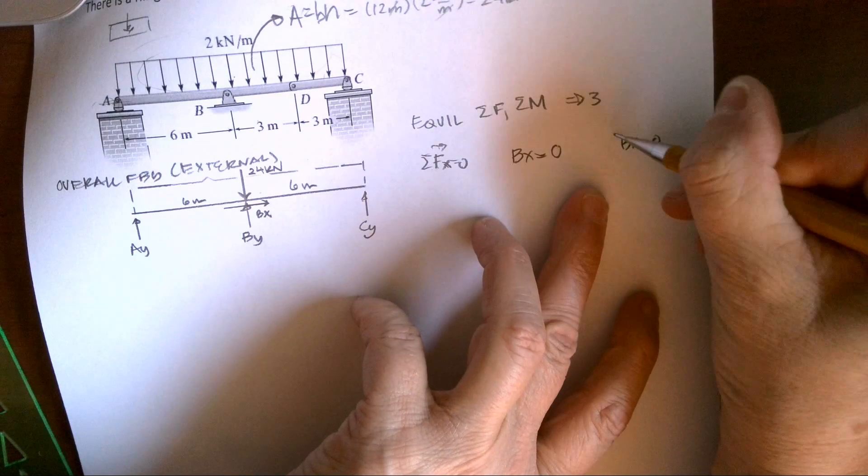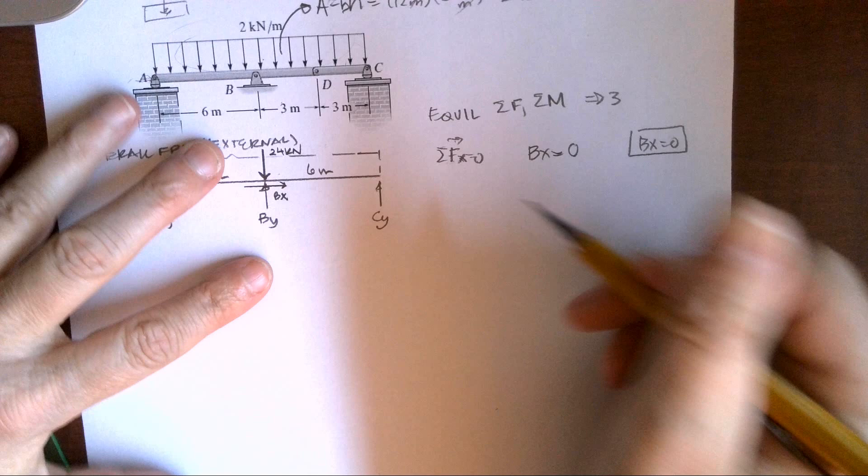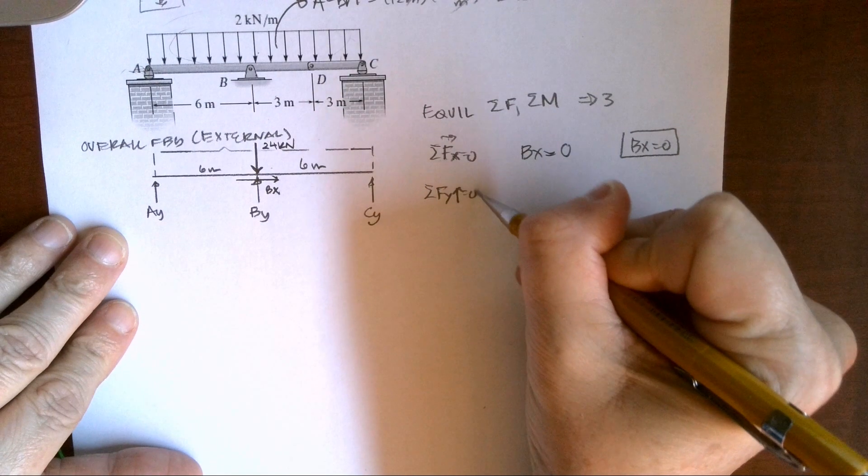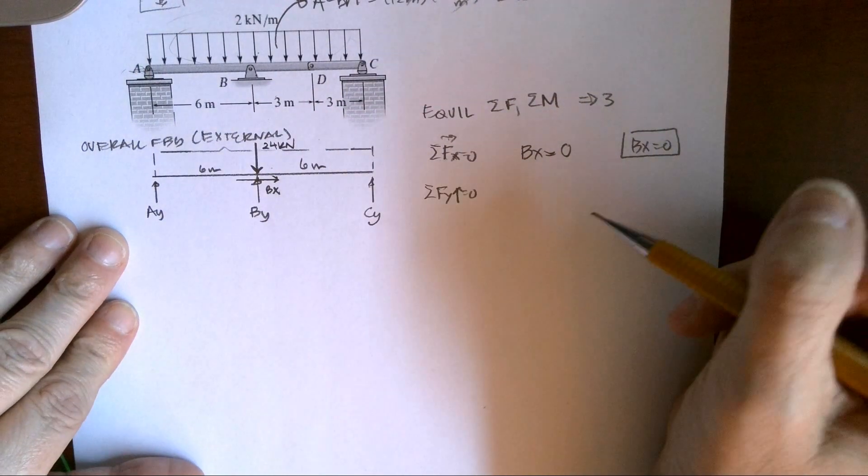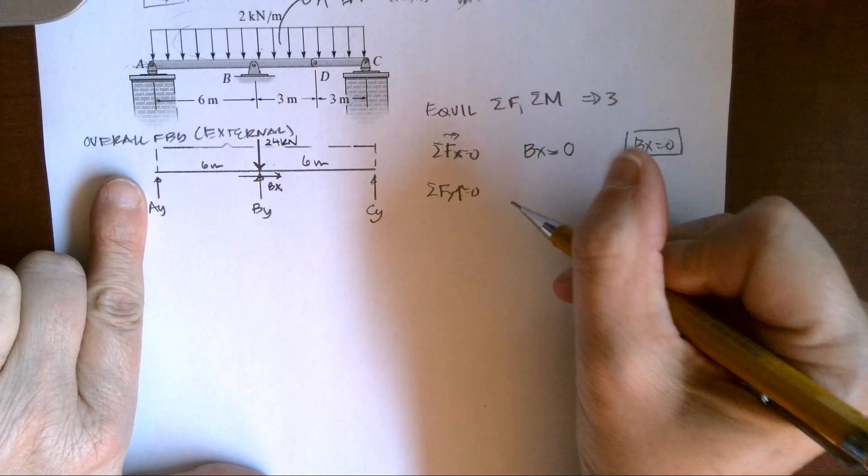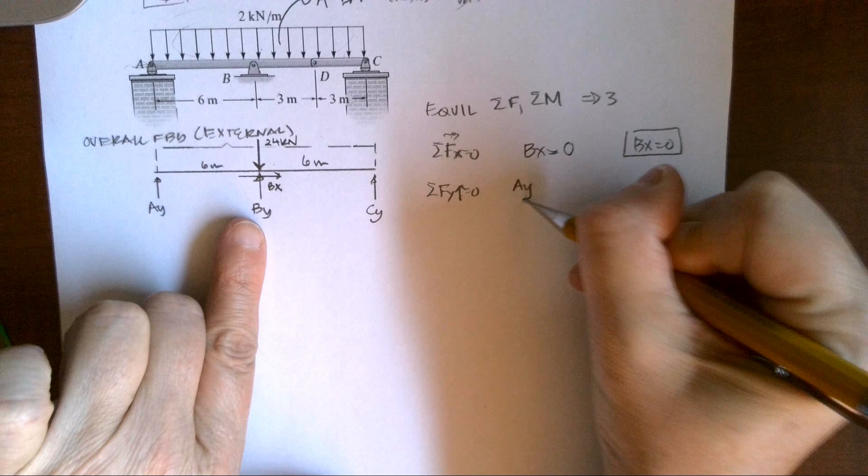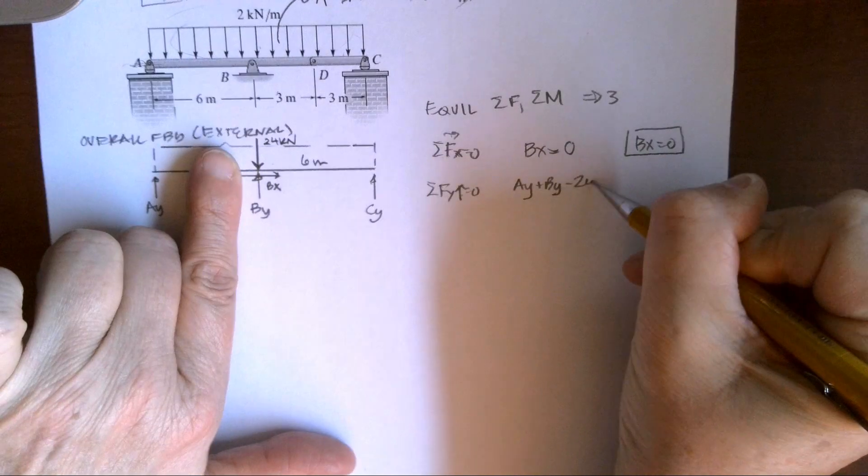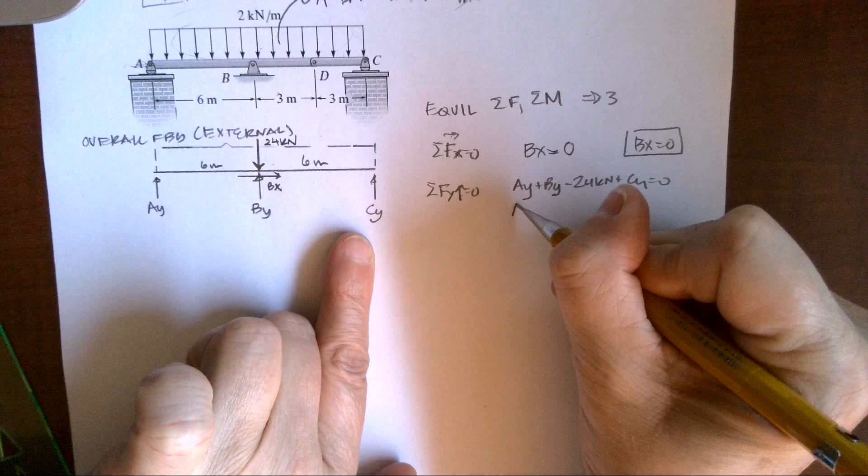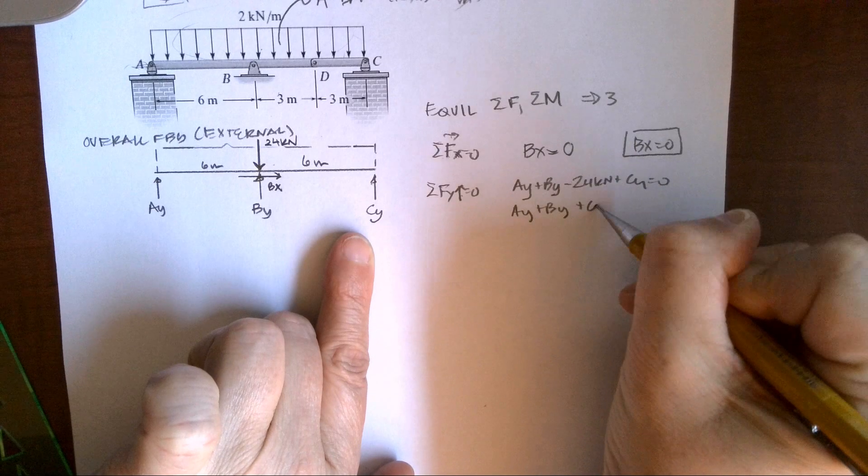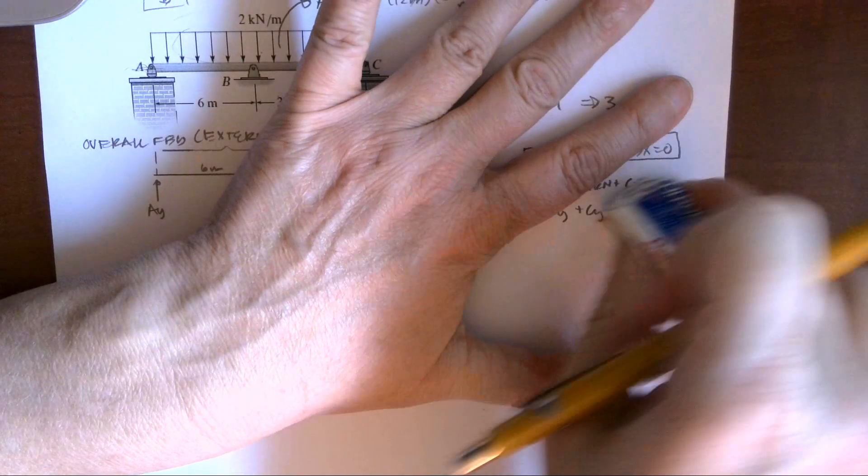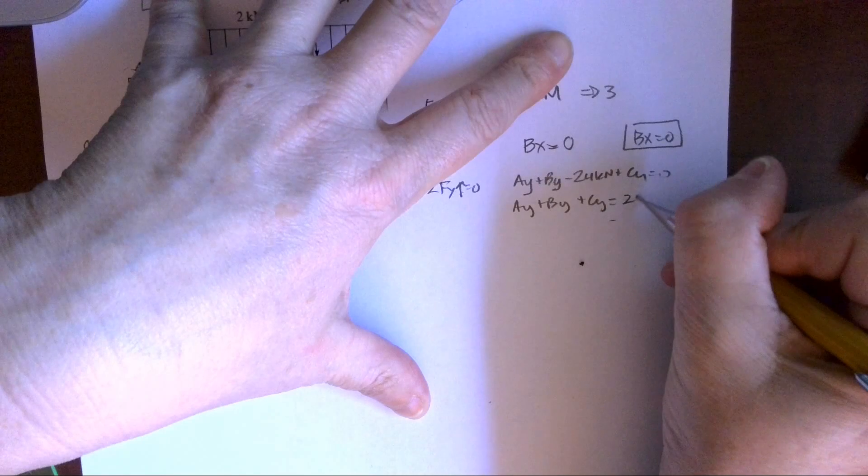Easy peasy. Now let's look at summing forces in the Y direction. And so I'm going to come through from left to right and find everything. I'm calling up positive. So I have AY plus BY minus 24 kilonewtons plus CY equals 0. So I'm going to rewrite this with all of my unknowns. When I move it over, it becomes positive, equals 24 kilonewtons.